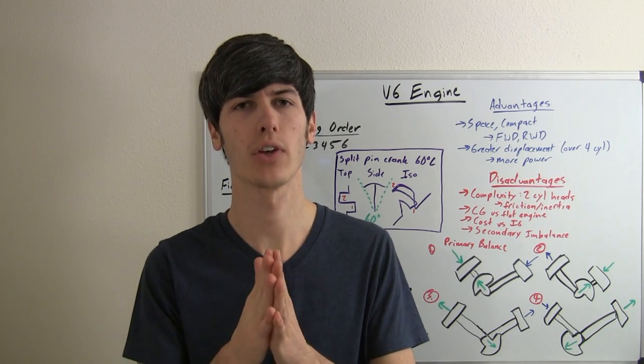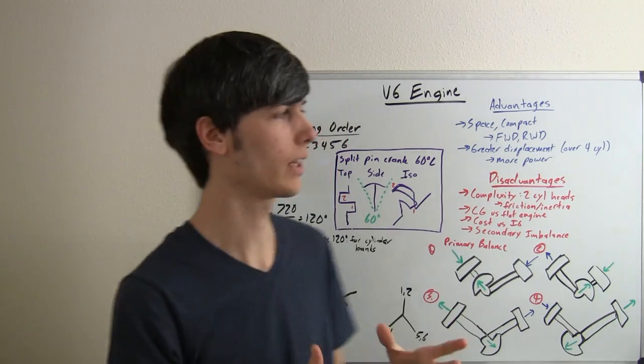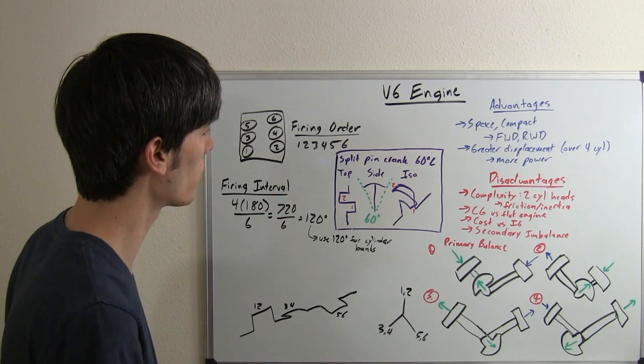Now, one thing manufacturers like to do is use a 60 degree angle, rather than a 120 degree angle, because it allows for a much more compact engine. The way you can do that is by either altering the firing order, or by using something called a split pin crank.